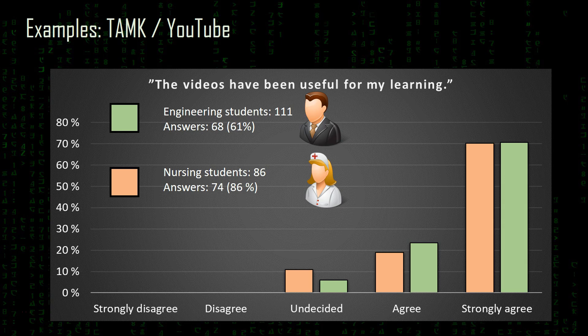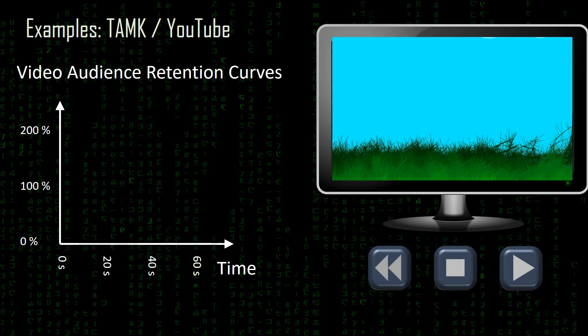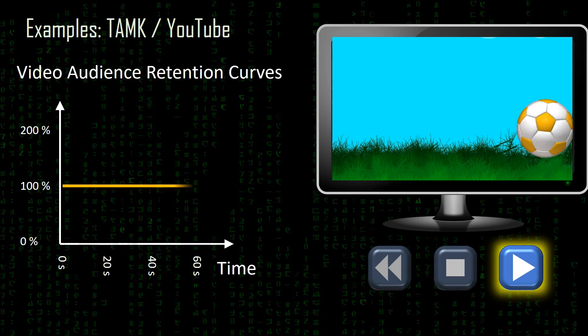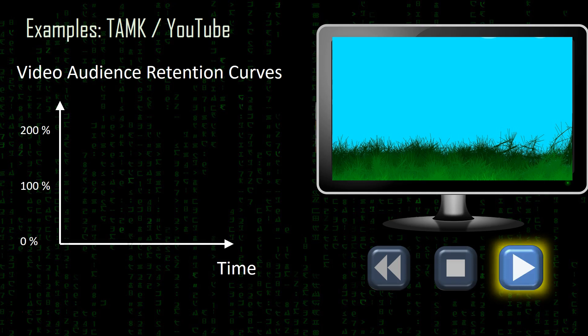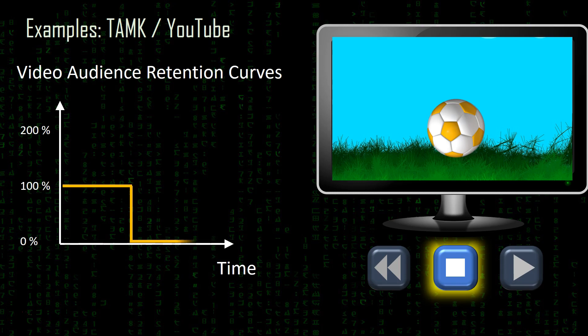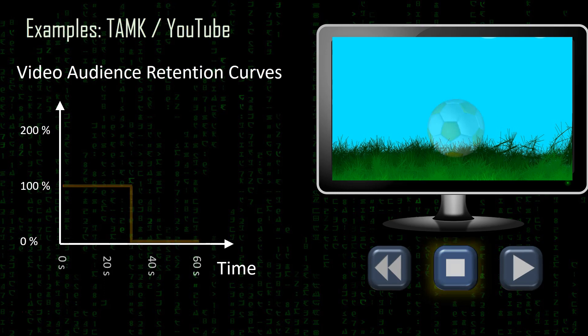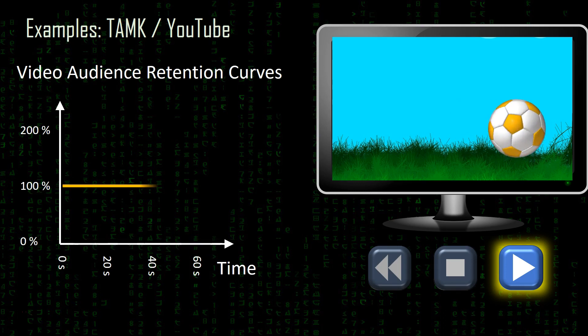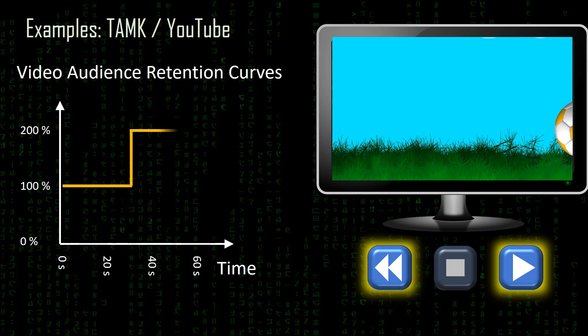What does audience retention mean? If a student watches one video once, the audience retention is 100%. If the same video is then stopped in the middle, the retention drops to zero at that point. And as a third example, if a student watches a video, finds it very interesting and watches again from the middle, then the percentage can be higher than 100%.